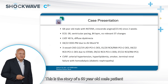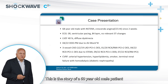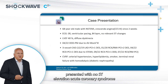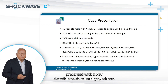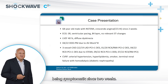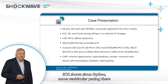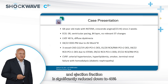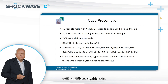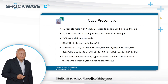This is the story of a 60-year-old male patient presented with non-ST elevation acute coronary syndrome, being symptomatic since two weeks. ECG shows sinus rhythm with some ventricular pacing, and ejection fraction is significantly reduced down to 40% with diffuse dyskinesia. The patient received a pacemaker earlier this year because of AV block grade 3.